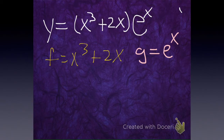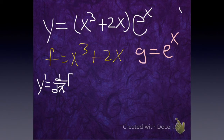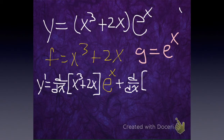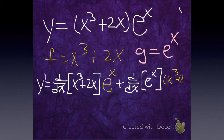So we're doing the derivative of the first times the second. So then y prime is going to be the derivative with respect to x of x to the third plus 2x — that's the derivative of the first times the second, plus the derivative of the second times the first. Now let's actually do the derivatives. What's the derivative of x to the third plus 2x?